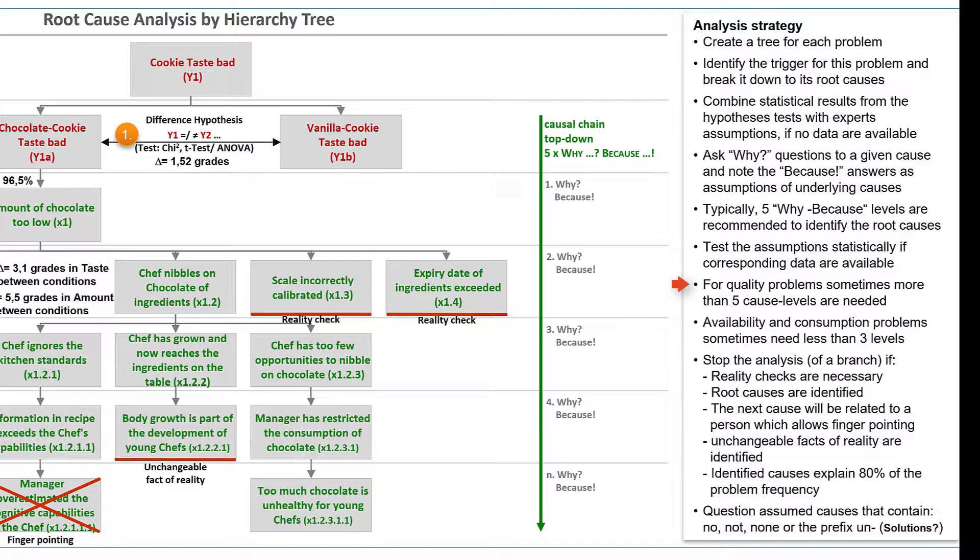Basically, I have made the experience that causes of quality problems are more deeply nested than availability problems. I have often observed that a quality problem resulted from exactly one trigger, and the root causes of the trigger were hidden several levels deeper in the cause hierarchy. In contrast, an availability problem often results from time losses at many activities of the process, whereby the chain from the trigger to the root causes is rather short and transparent. Sometimes only three hierarchy levels in trees for availability problems are necessary.